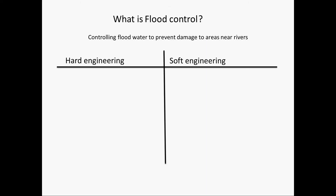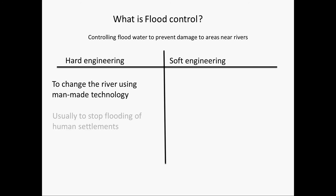Last week we had this table and on the hard engineering side we added what hard engineering is — which is to change the river using man-made technology — and what it is used for, which is usually to stop flooding of human settlements. This week we are going to try and fill in the other half.